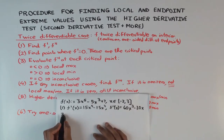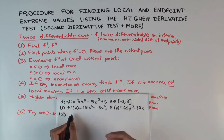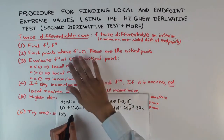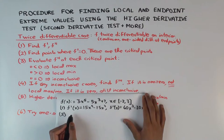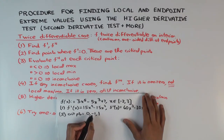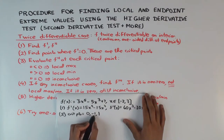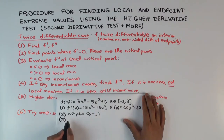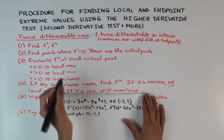Now we have to find the critical points. Because the function is differentiable, we only need to worry about points where f prime is zero. The points where f prime equals zero are x = 0, x = -1, and x = 1. We'll go from left to right: negative one, zero, one.